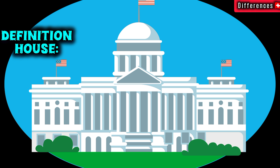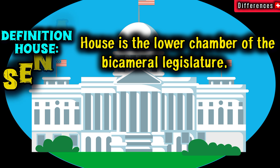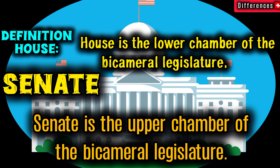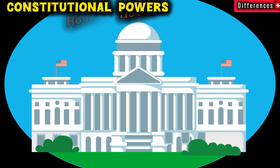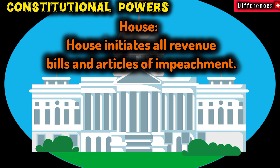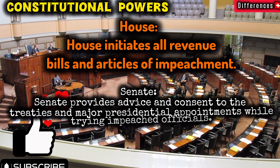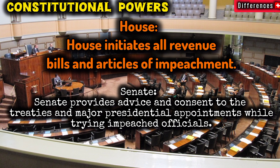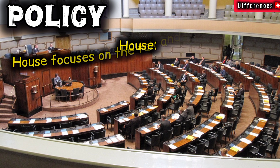Differences between House and Senate. Definition: the House is the lower chamber of the bicameral legislature, while the Senate is the upper chamber. Constitutional powers: the House initiates all revenue bills and articles of impeachment, whereas the Senate provides advice and consent on treaties and major presidential appointments, while also trying impeached officials.